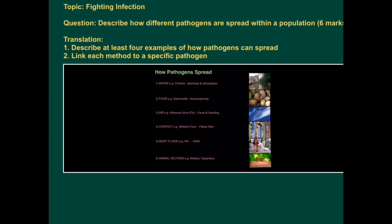This exam application tutorial is on the topic of fighting infection. The question, for six marks, is: describe how different pathogens are spread within a population. In other words, describe at least four examples of how pathogens can spread and link each method to a specific pathogen as an example.